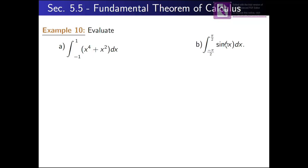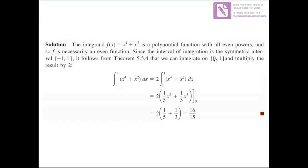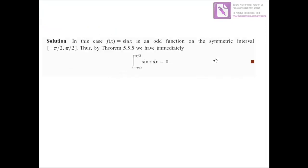If you evaluate the integral of sin(x) directly, the antiderivative is negative cosine x. Replacing x by π/2 and minus π/2 also gives 0. But using the theorem, since the function is odd and symmetric on this interval, by the odd function rule this integral is equal to 0.